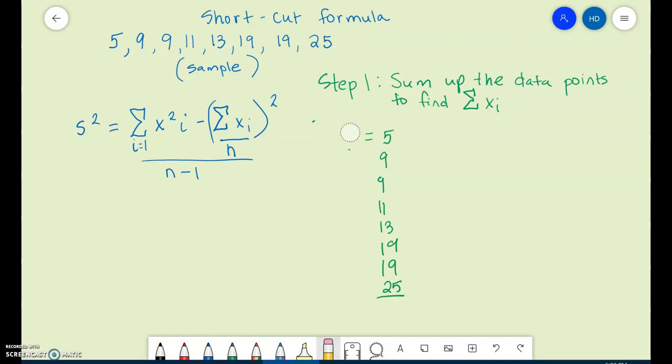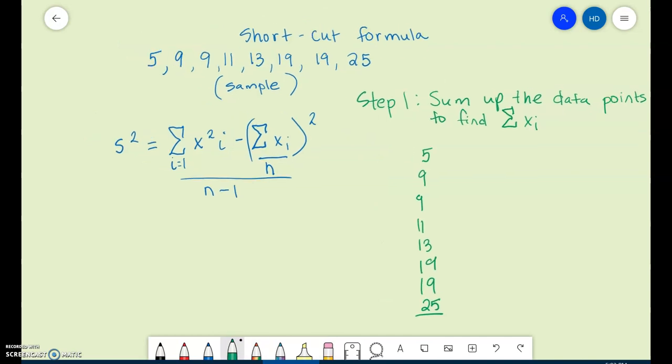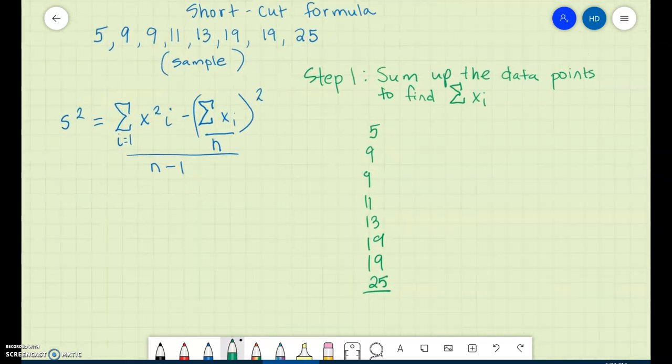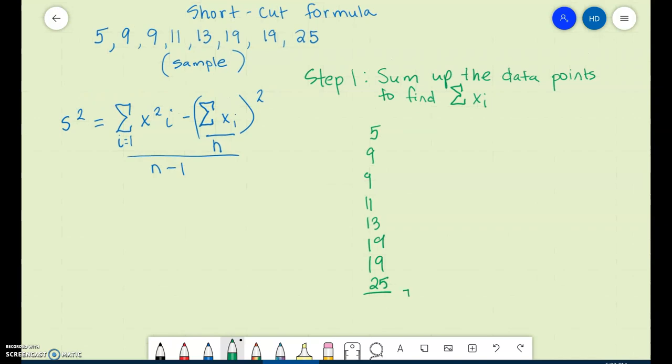So what I'm going to do is down here beside it, I'm going to write the sum of Xi. I'm just summing up all my data points, and when I sum those up, I will get 110. So now I have figured out what Xi is, and it equals 110.